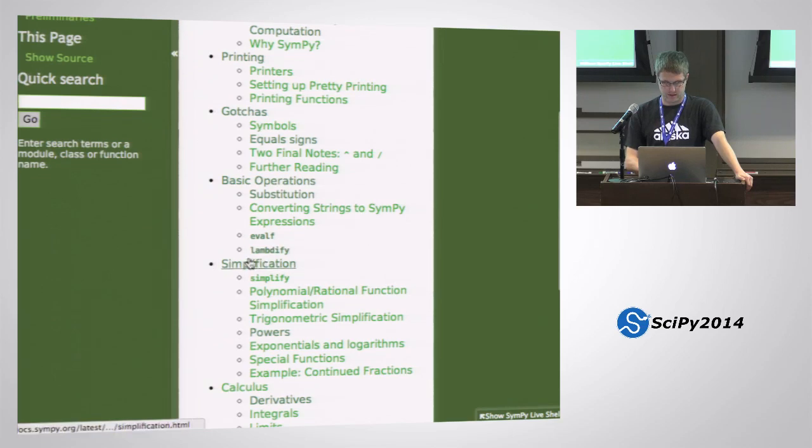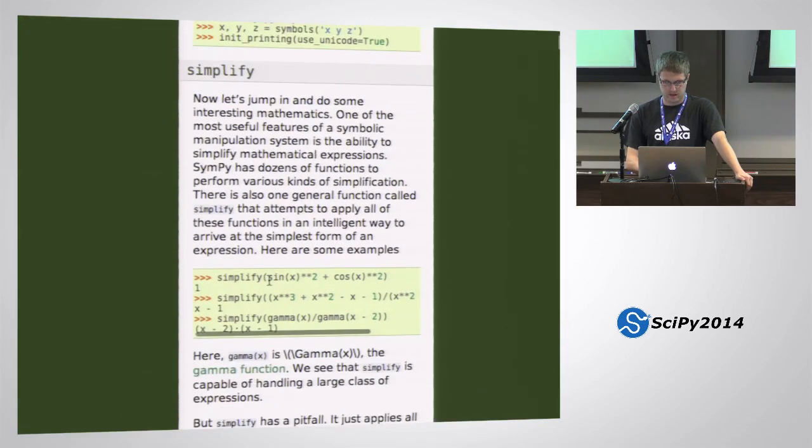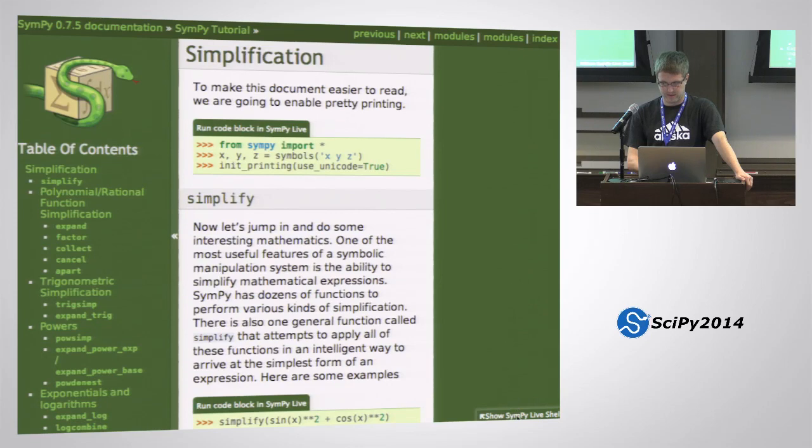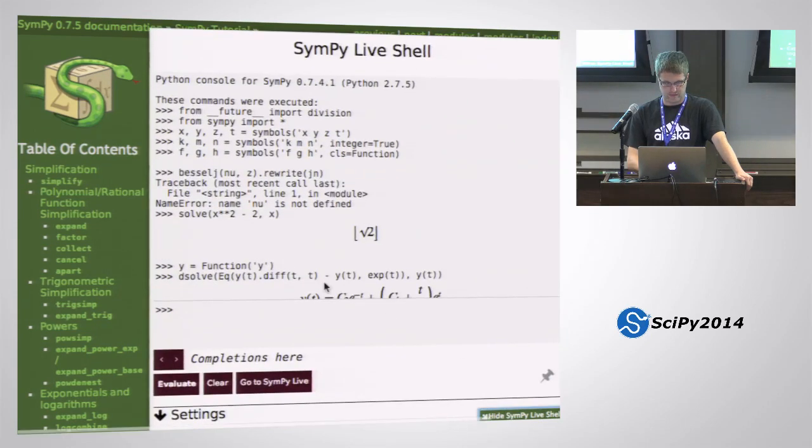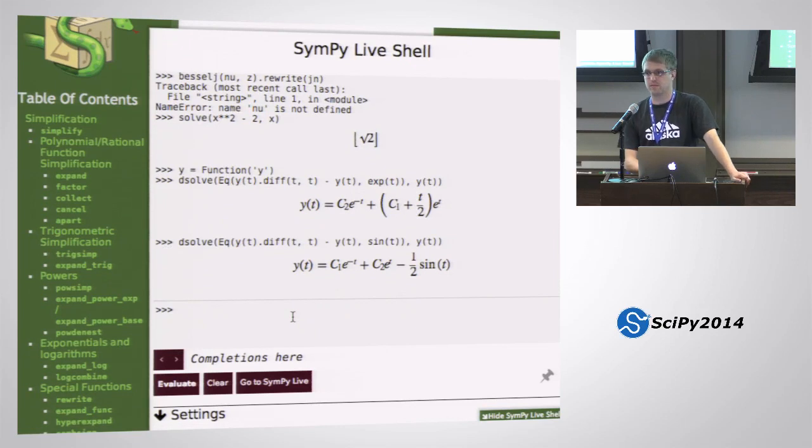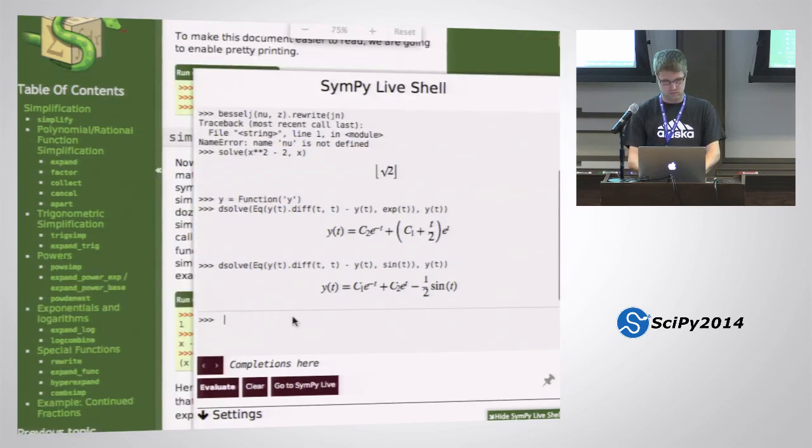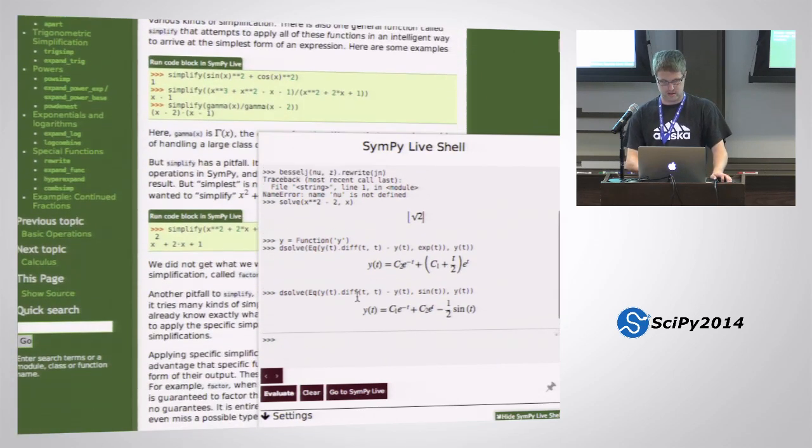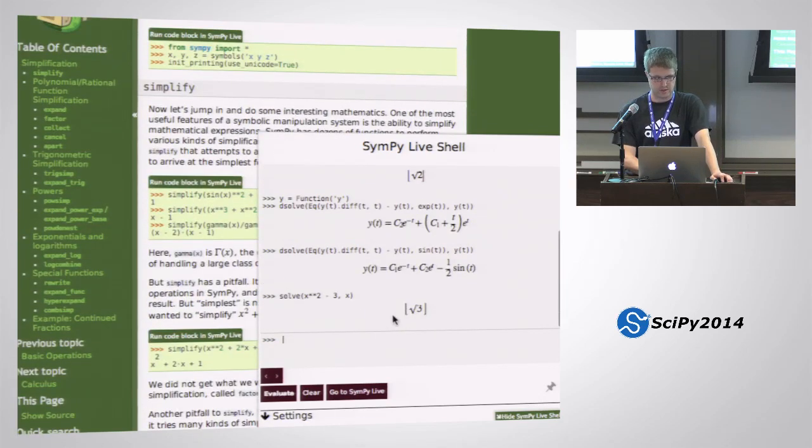And something to note here on our docs is down here in the bottom, there's this button that says show SymPy live shell. And if you pull this up, this is a shell that runs on the Google App Engine, and it's basically just SymPy. So you can run any SymPy thing in here, and it's like a little, basically a Python shell for SymPy.